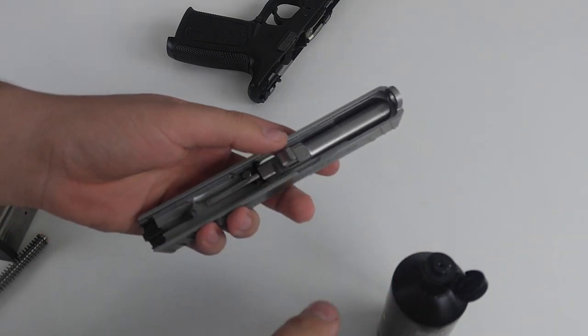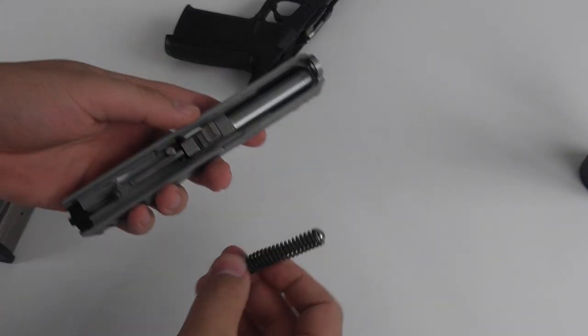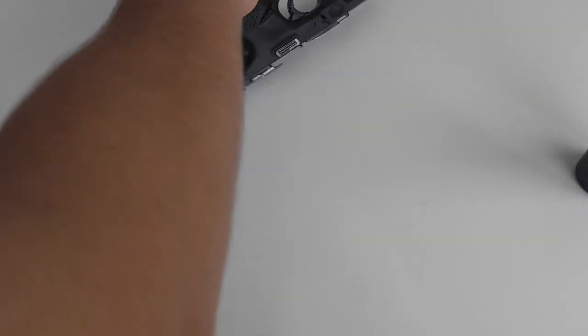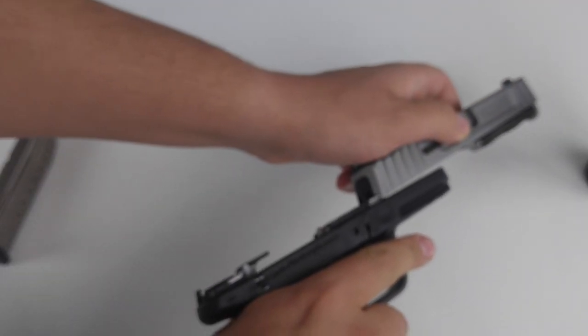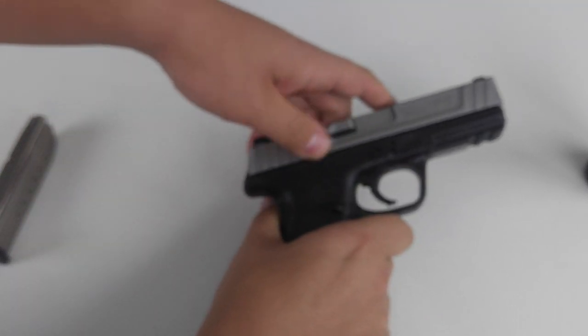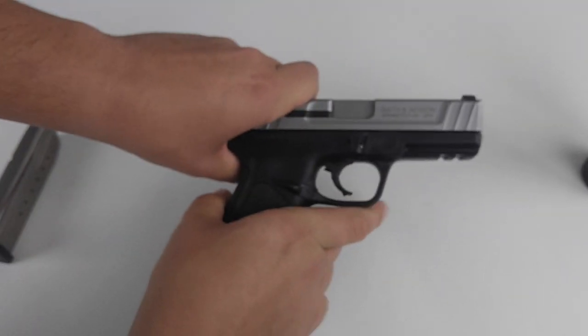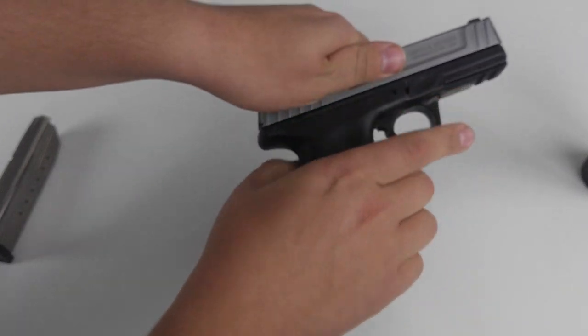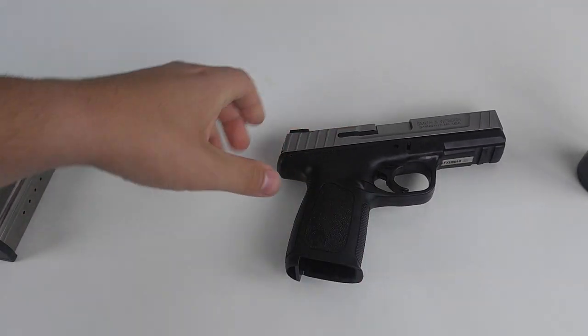Put the barrel in first and we will put in the spring, and then put the slide back on. Lock it in. Everything should be oiled up and ready to go.